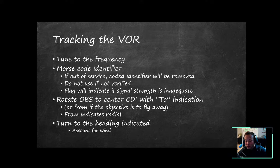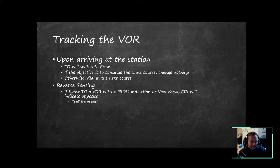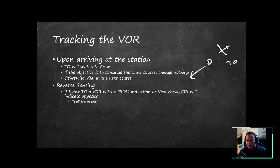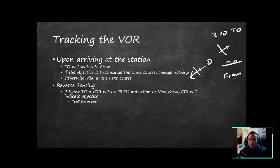Once you're established, account for wind if you notice you're on heading and following the VOR but drifting off course. When you get to the station: if you're flying to it with a to indication and then bypass the station, it switches from to to from but stays on the same course. Say we're flying 210 to the station — once we fly over it, it switches to from and we fly away from the station on the 210 radial.